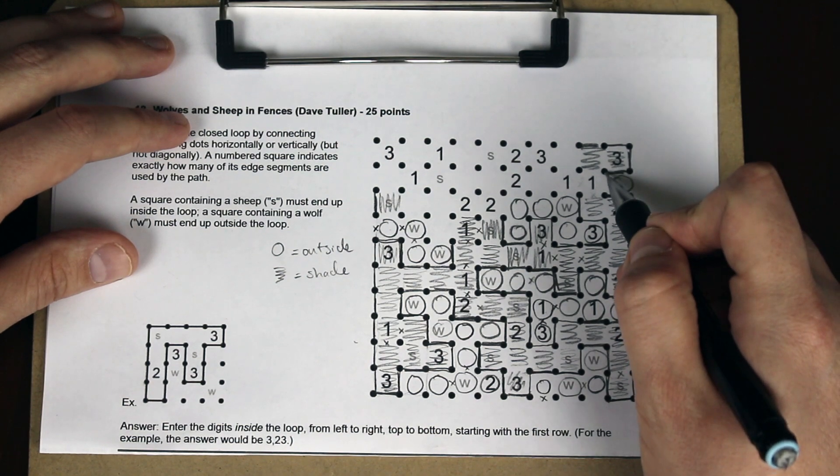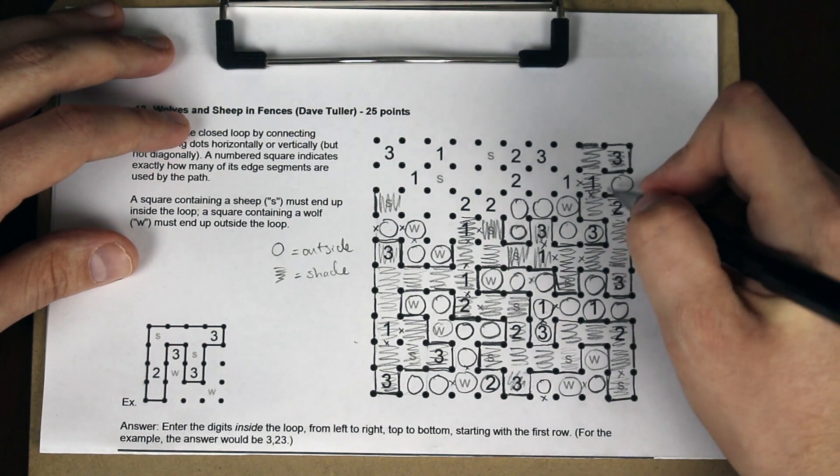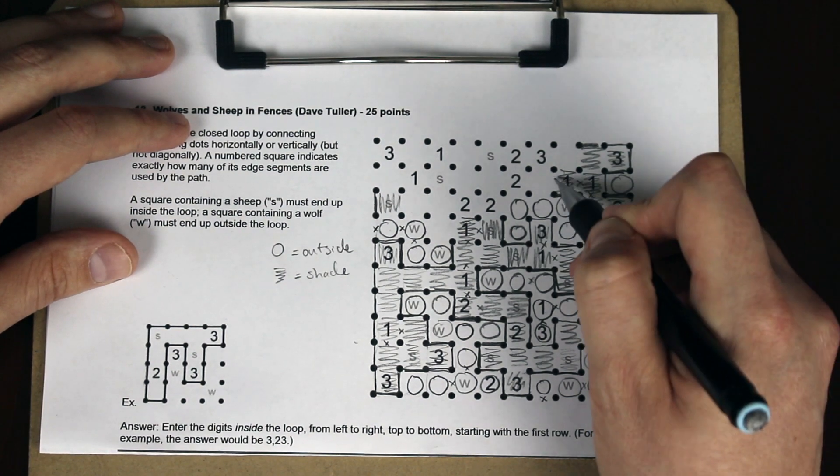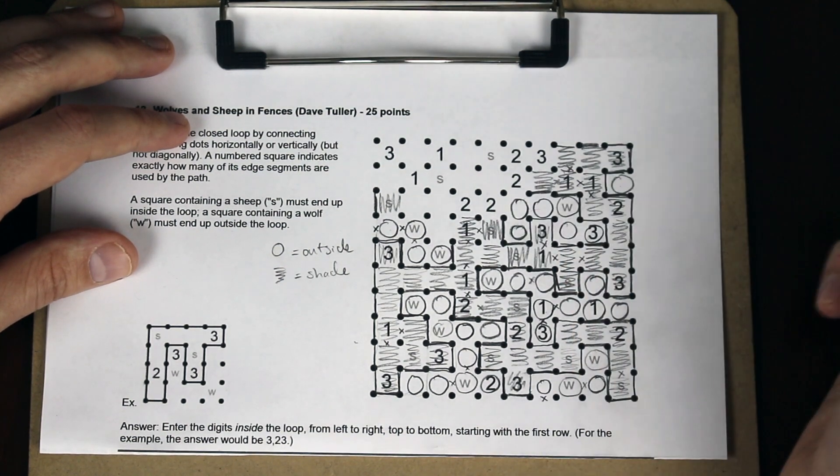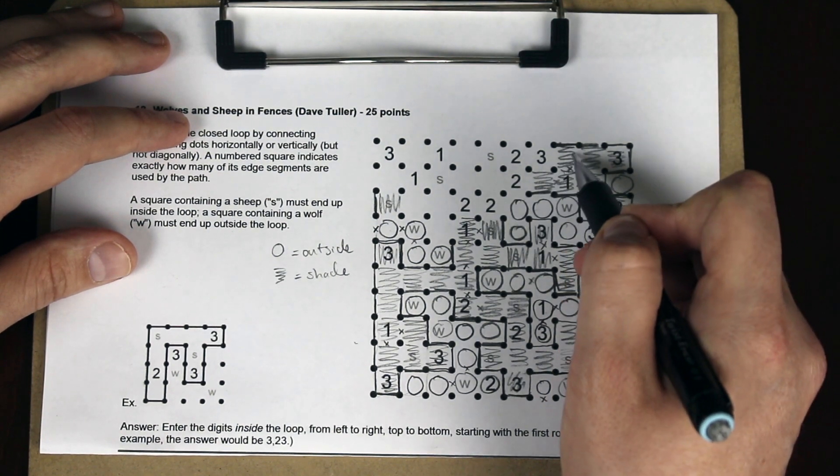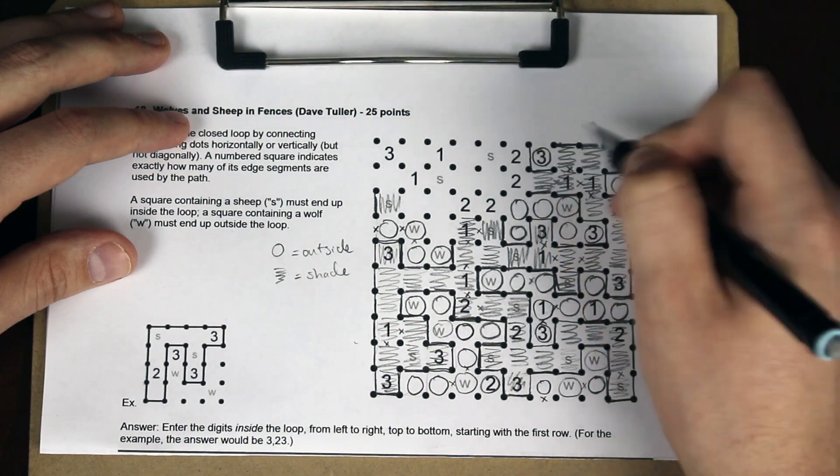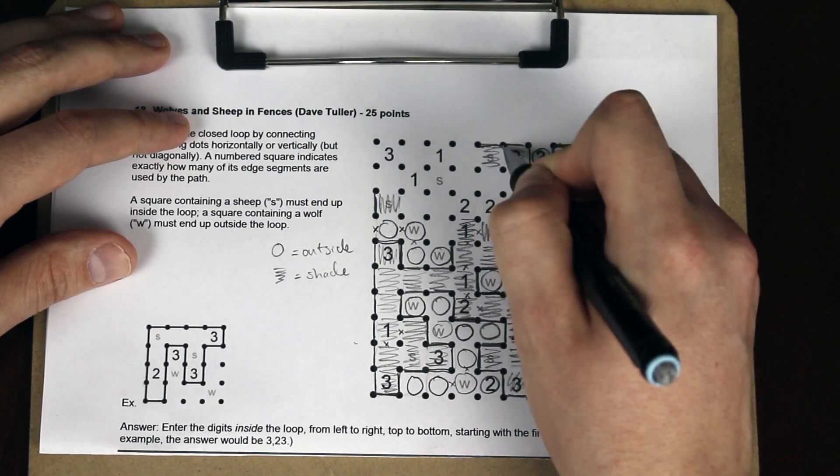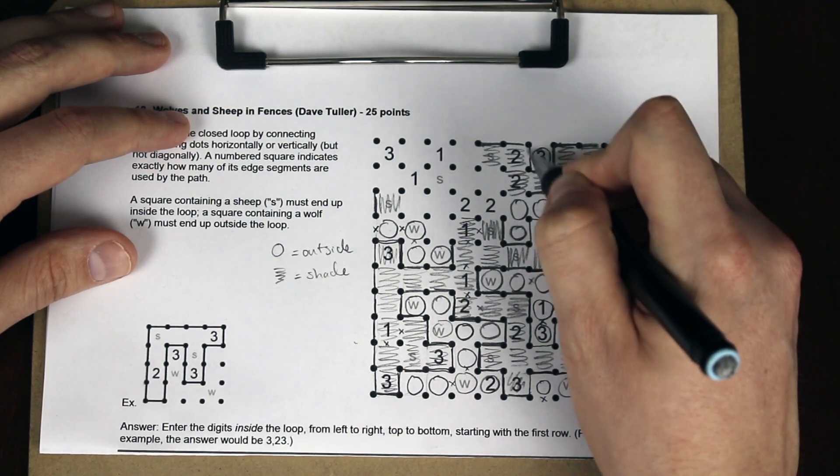This two is complete because we need a line between the inner and the outer part. We know from the Slytherlink video that this has to be inside the loop because of those two line segments there, which tells us exactly how it goes. Now this segment here is either going to go down or left, so these two cannot be filled in, meaning that it's inside the loop. This is inside the loop with that line segment there.